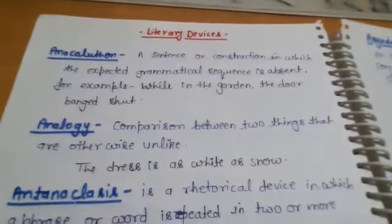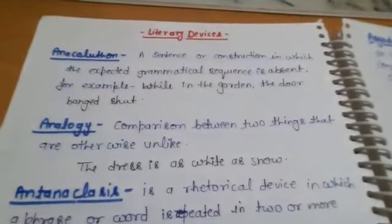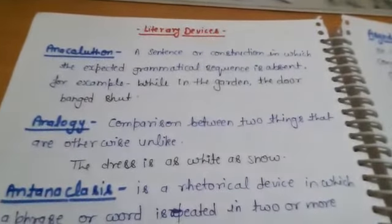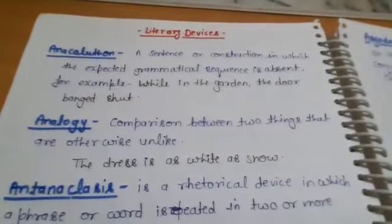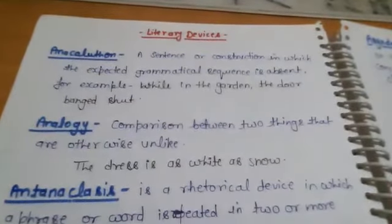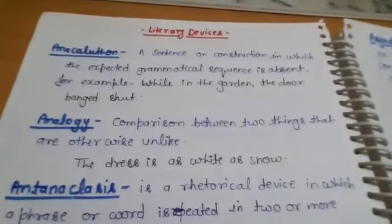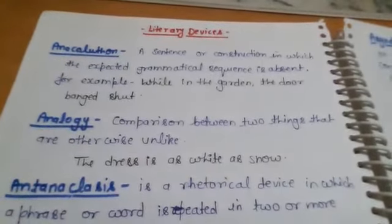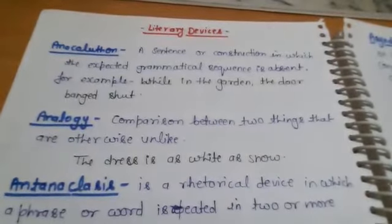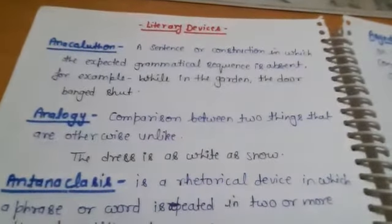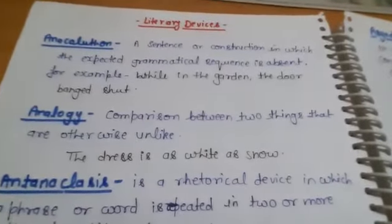When grammatical sequence is absent, you expect that you should have a grammatical sequence. But if the grammatical sequence is not followed, you have anacoluthan. For example: 'while in the garden, the door banged shut.' The structure of the sentence should be subject, then verb, then object. If a subject is used but after subject a verb is not used, then here is anacoluthan.